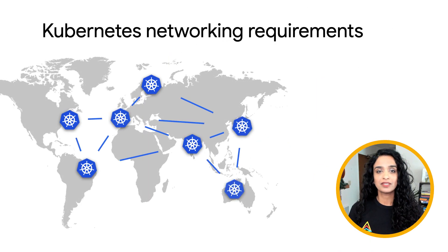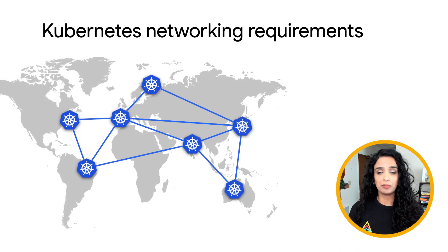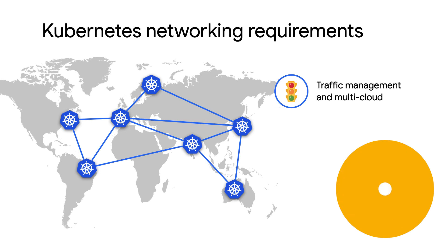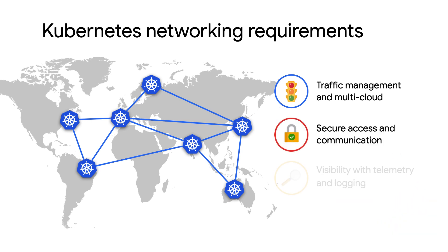Let's start with Kubernetes. As more enterprises adopt Kubernetes, new requirements are coming up around multi-cloud, security, and visibility. New technologies like Service Mesh demand more customizations of the underlying Kubernetes layer. These requirements all need a more programmable data plane that can do Kubernetes-aware networking without sacrificing performance.